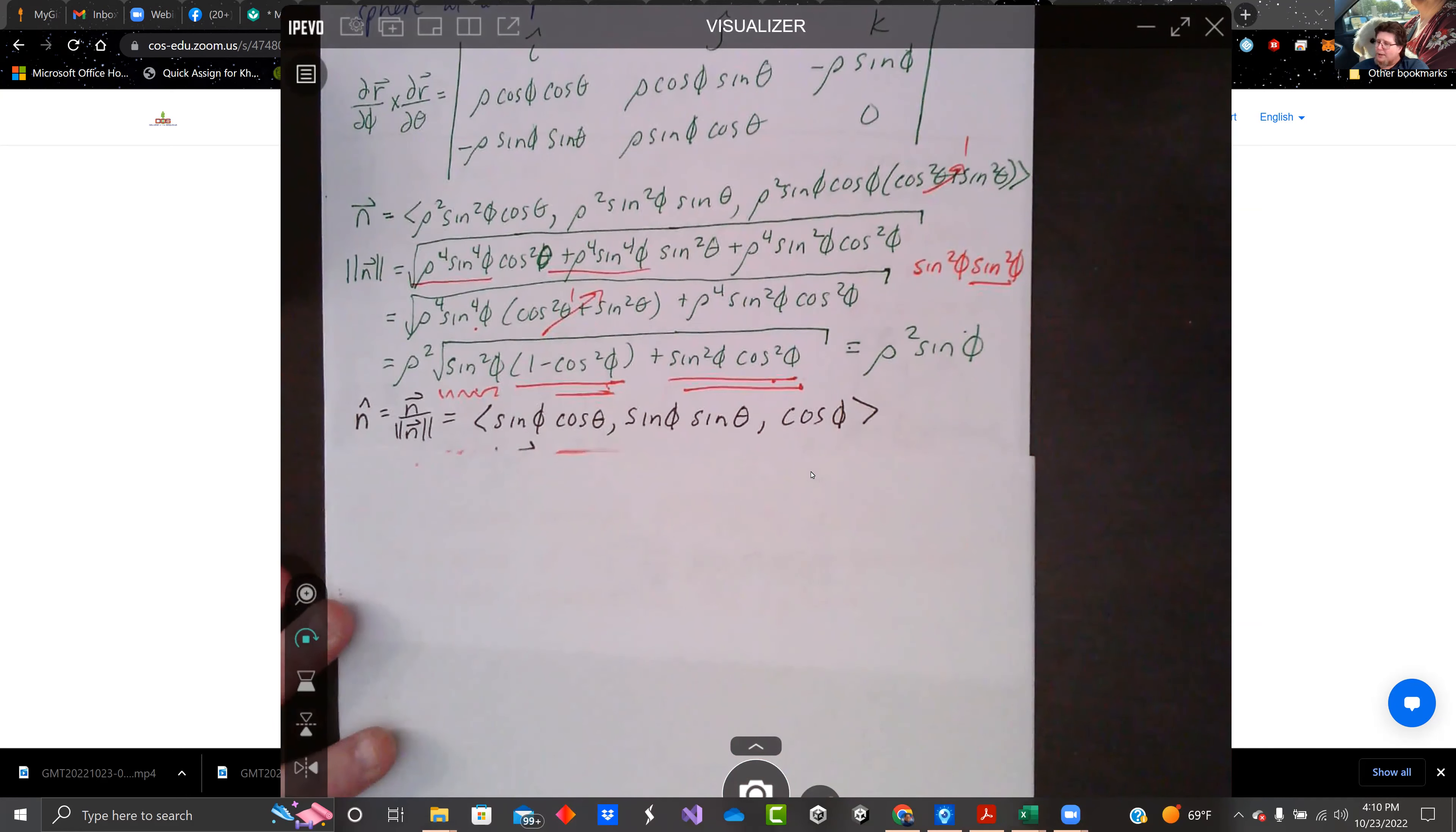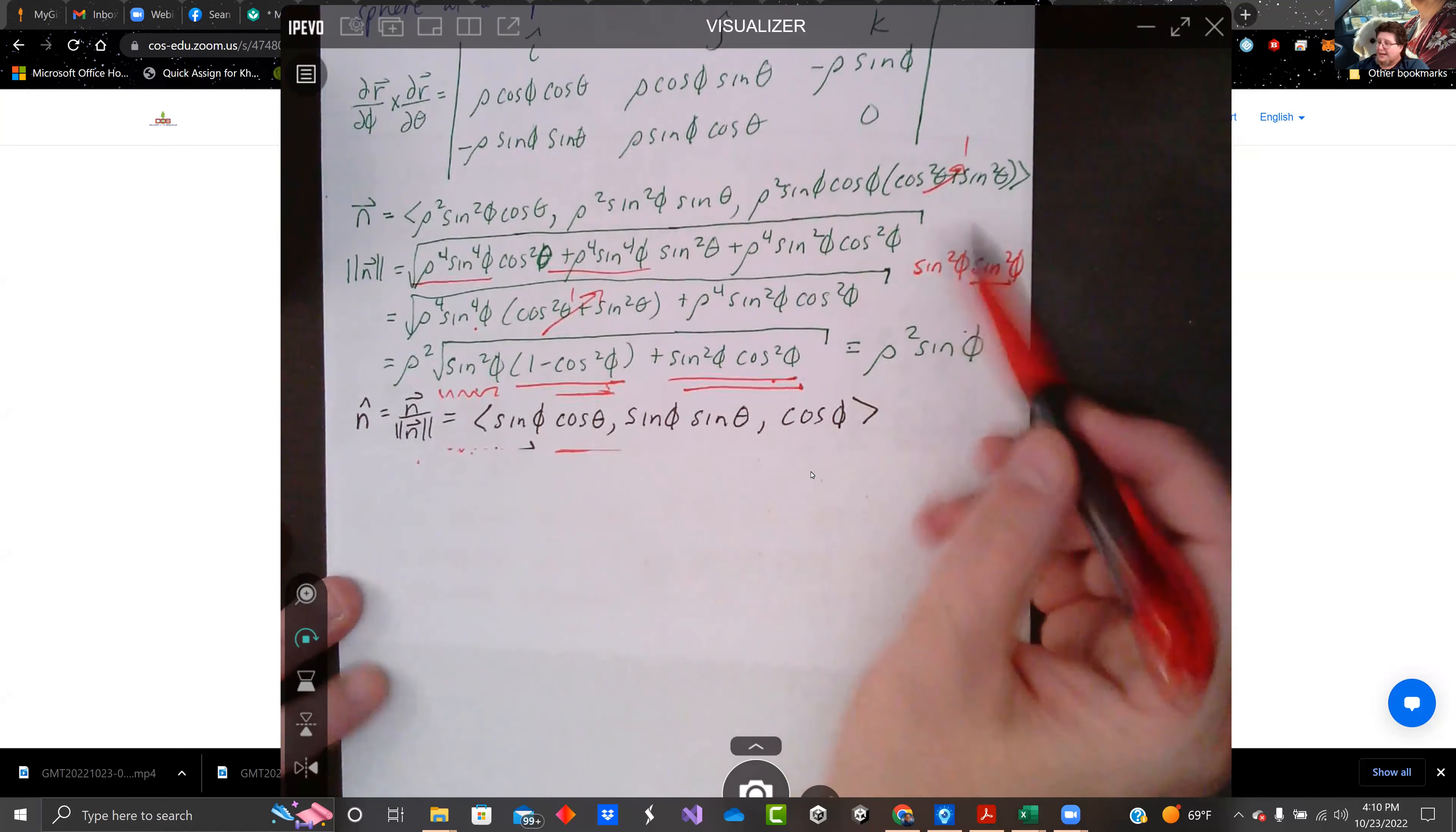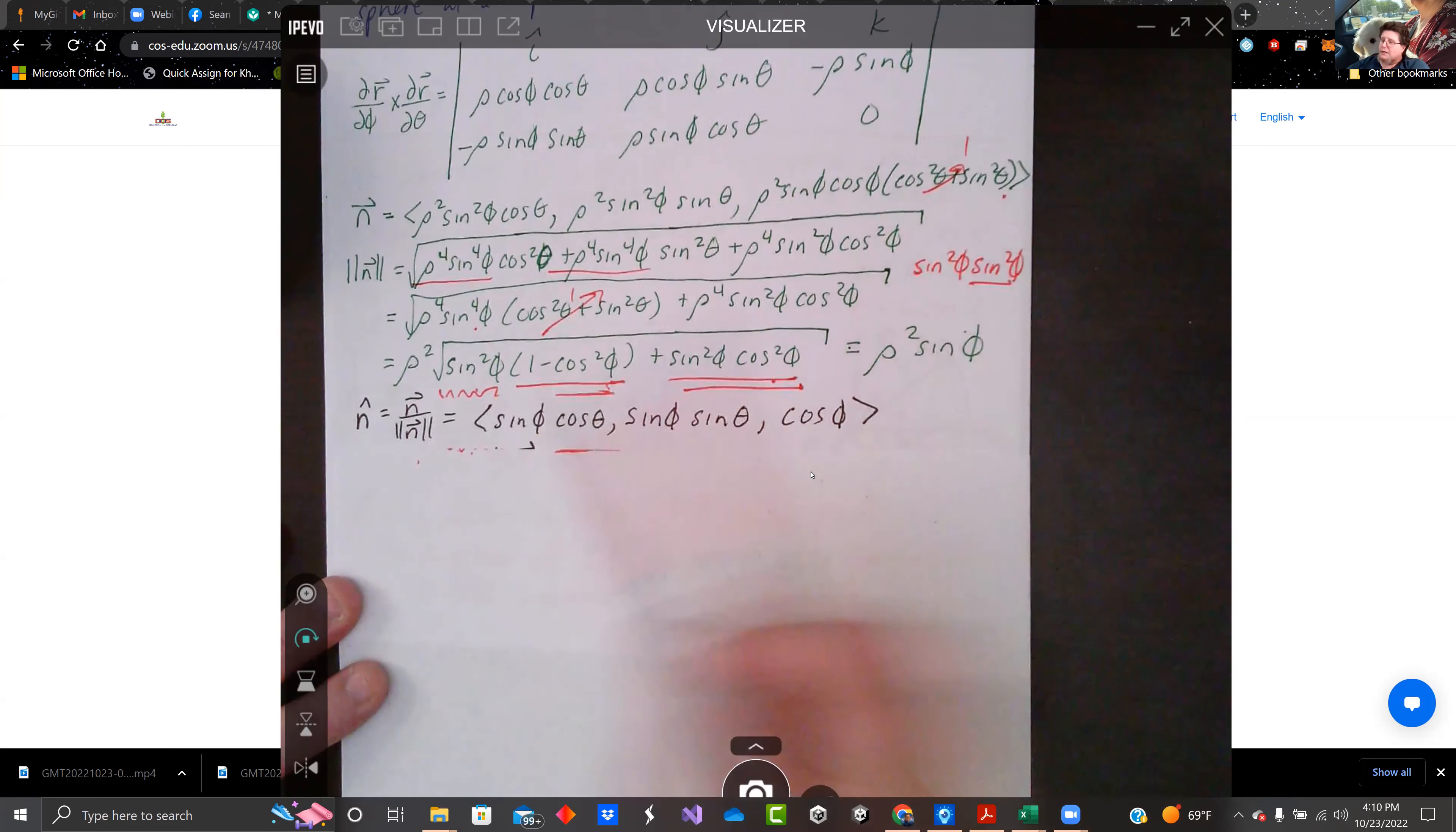So if we normalize it, because that was the norm, rho squared sine phi, we normalize n. We had our n up here. We're going to divide that by rho squared sine phi. We get sine phi cosine theta, sine phi sine theta, and cosine phi.